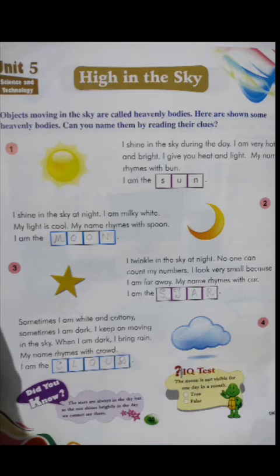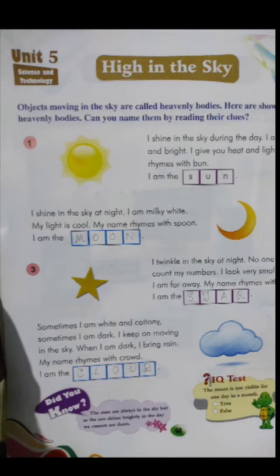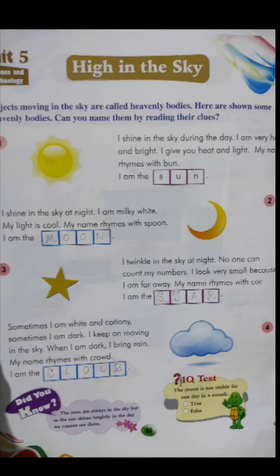Next: I shine in the sky at night, I am milky white, my light is cool, my name rhymes with spoon - I am the Moon. The moon appears at night. Moon and stars always stay in the sky, but we cannot see them at daytime because the sun's rays are so bright. At night, when we cannot see the sun, we can see the moon and stars. Number three: I twinkle in the sky at night, no one can count my numbers - those are the stars, which look very small because they are very far away.